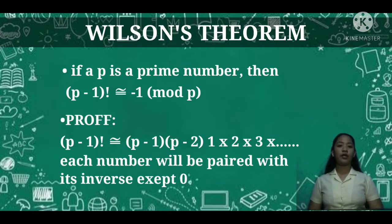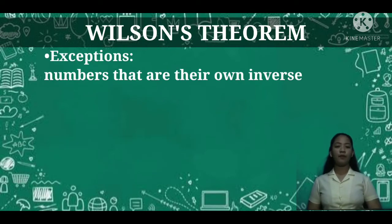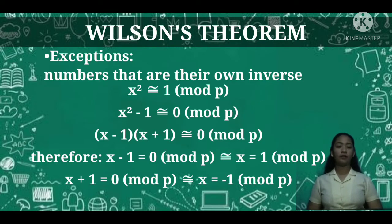Any non-zero number has an inverse, but there are some exceptions, such as numbers that are their own inverse, which are the solutions to x² ≅ 1 (mod p).